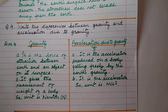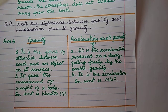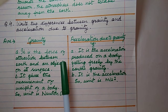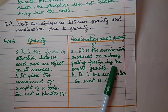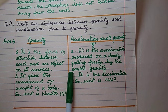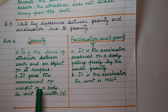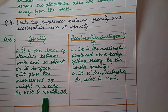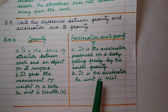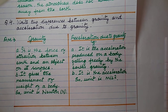Write two differences between gravity and acceleration due to gravity. Gravity is the force of attraction between the earth and an object on or close to its surface, and its unit is Newton (N). Acceleration due to gravity is the acceleration produced on a body falling freely due to the earth's gravity, and its unit is meter per second squared (m/s²).